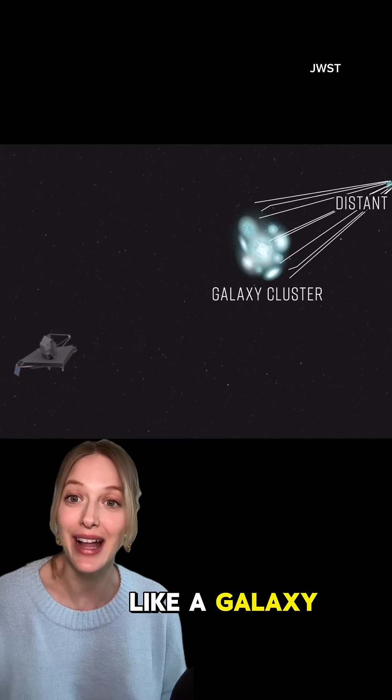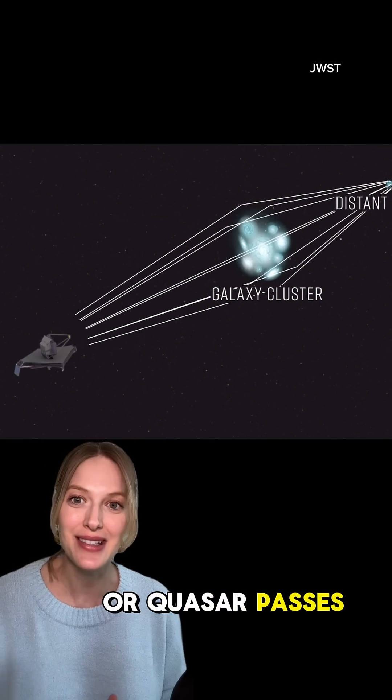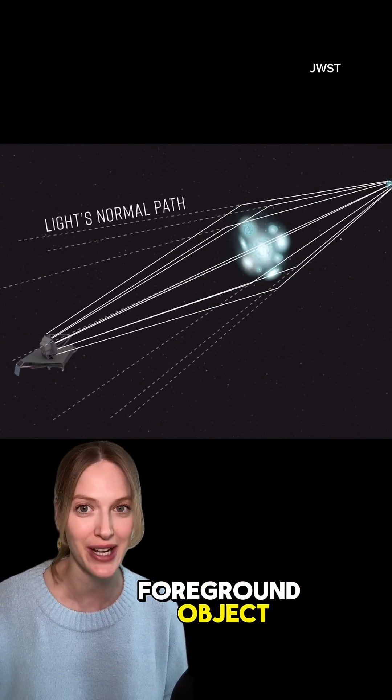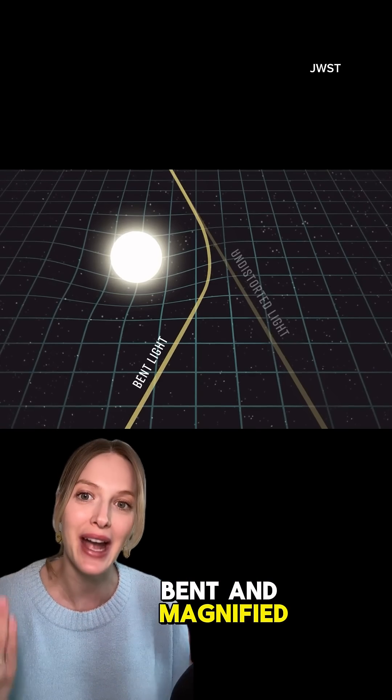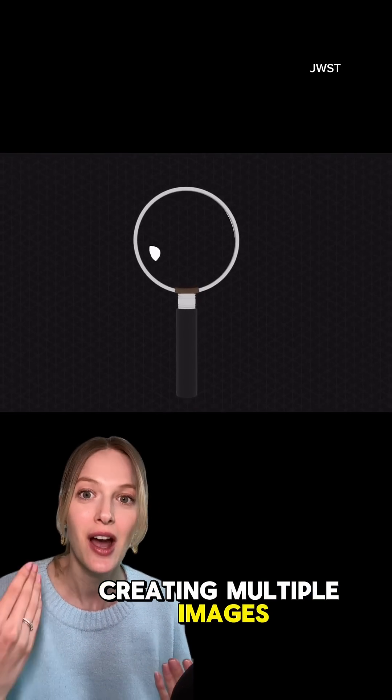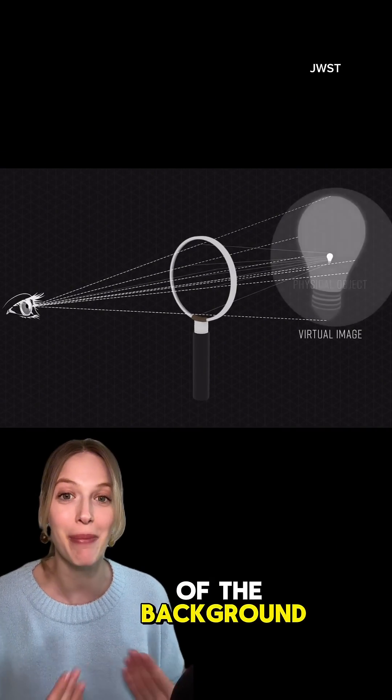When light from a distant source, like a galaxy or quasar, passes near a massive foreground object, such as another galaxy or a galaxy cluster, the light is bent and magnified, creating multiple images, arcs, or distortions of the background object.